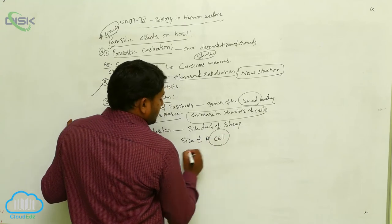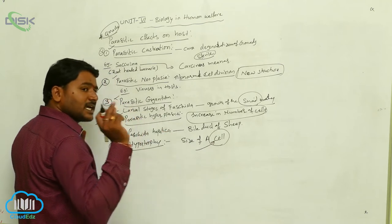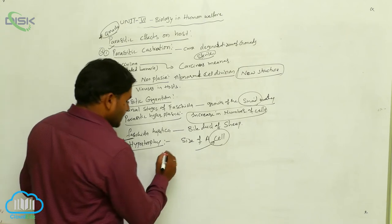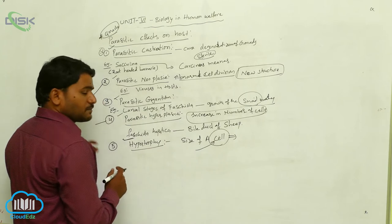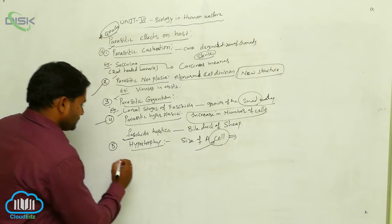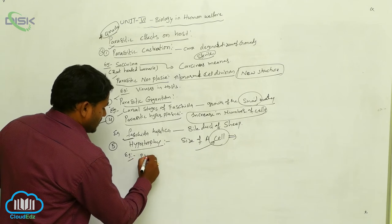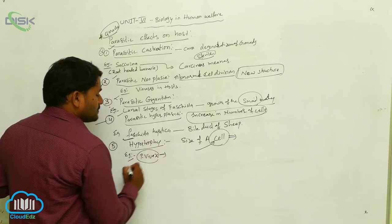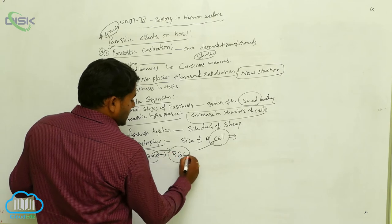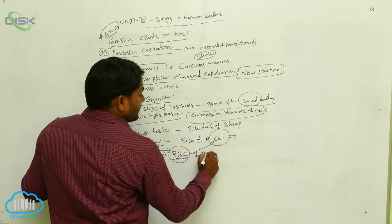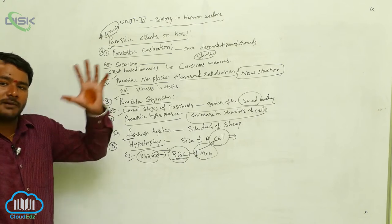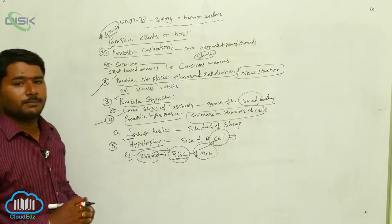Size of a cell. A parasitic infection causing an increase in the size of a single cell is called hypertrophy. For example, Plasmodium vivax causes an abnormal increase in the RBC size of man. When a man gets infected with Plasmodium vivax, that parasite causes an abnormal increase in the size of the RBC cells. This is called hypertrophy.